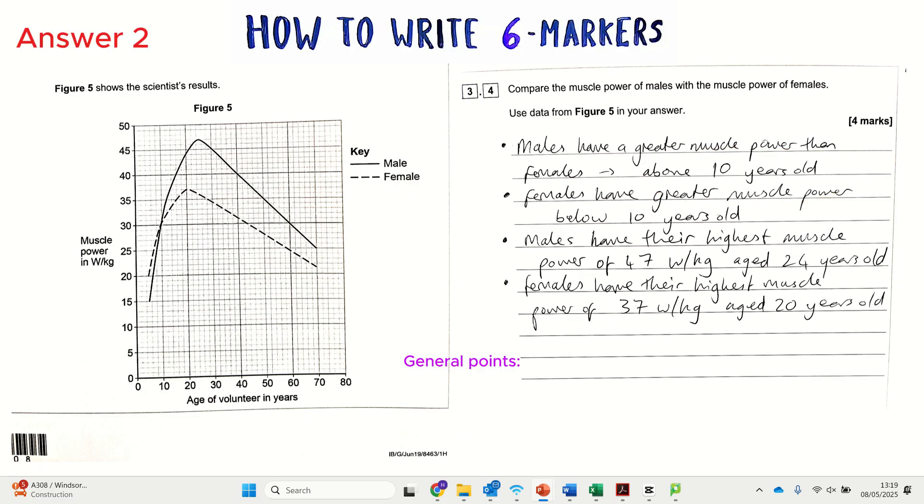Usually those mean the same thing but the graph doesn't tell us that. The person talks about the graph or the line going up and coming back down. You cannot say the line or the graph, you've got to say what the line is representing. So I'll have a look at a really good answer now that does that in only four bullet points. We can already see it's easier to mark, we've got numbers in the answer, which is always a good sign. The first bullet point to make is that males have a greater muscle power than females, and that only applies above 10 years old.